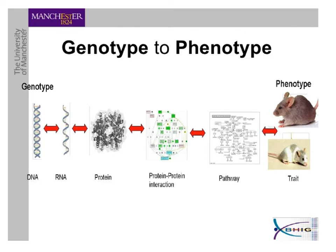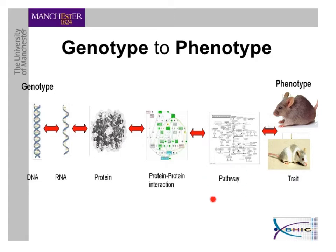In essence, gene expression is the process of using the DNA to ultimately produce a trait. This happens by first transcribing the DNA into RNA, then that RNA is translated into protein. We produce multiple types of proteins, and those proteins interact with each other in different ways depending on the proteins being made, creating metabolic pathways.